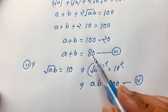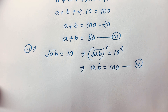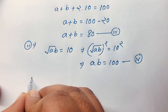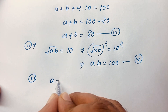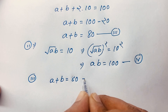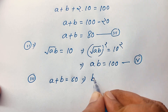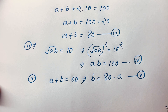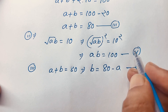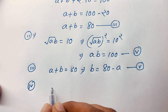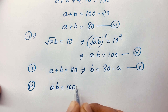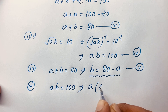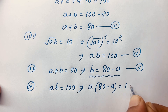So we have found that a plus b equals 80 and ab equals 100. Now we will find the value of a and b. From the third equation, a plus b equals 80, so b equals 80 minus a. Substituting into the fourth equation, ab equals a times (80 minus a) equals 100.